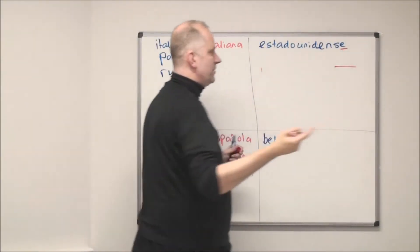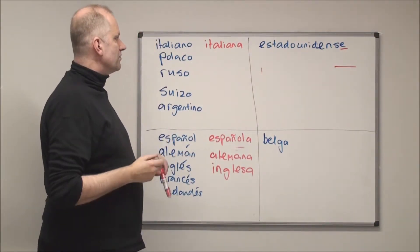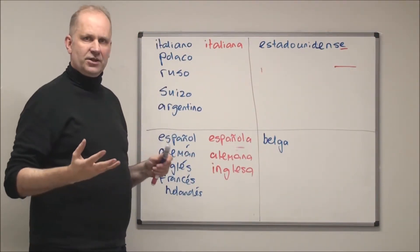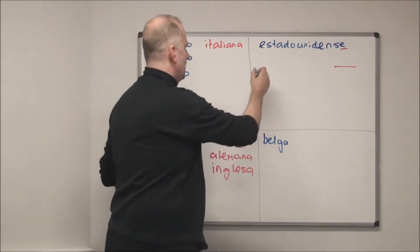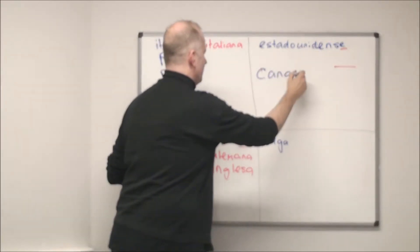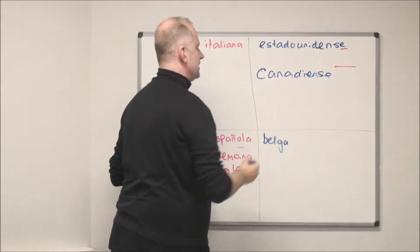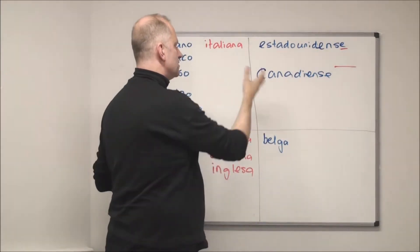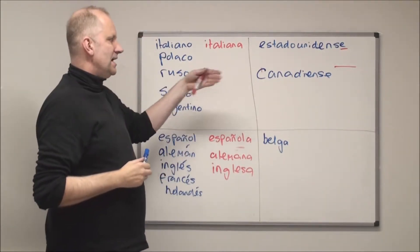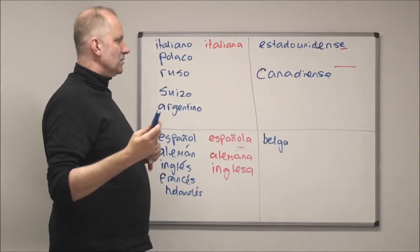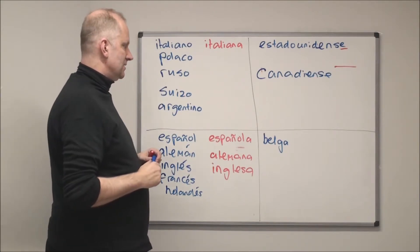Another example of a nationality adjective ending in -e is 'canadiense', meaning Canadian. So to talk about a Canadian man: 'canadiense'; and for a woman: also 'canadiense' — it doesn't change.